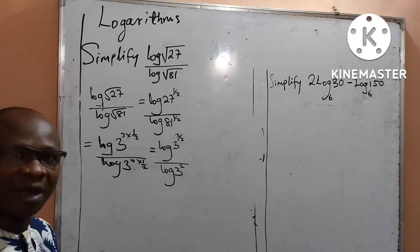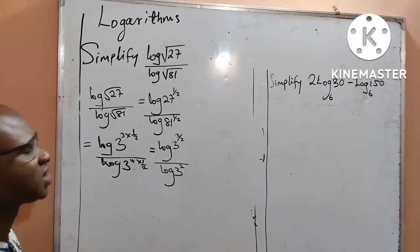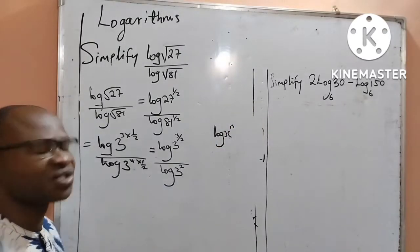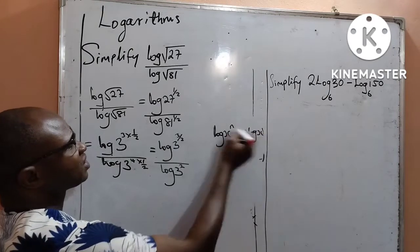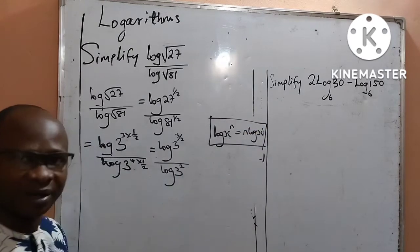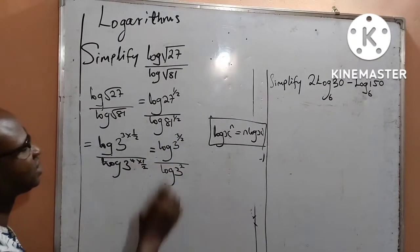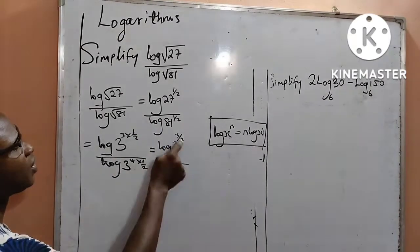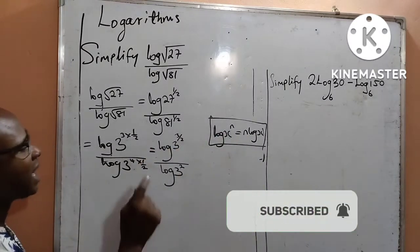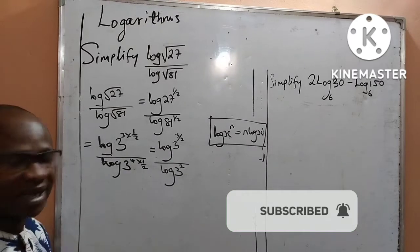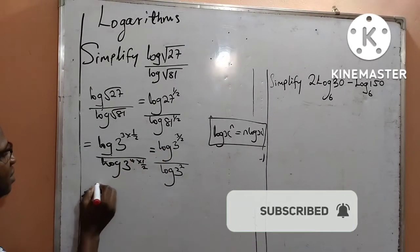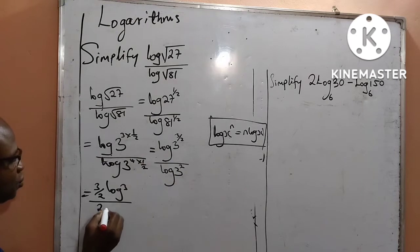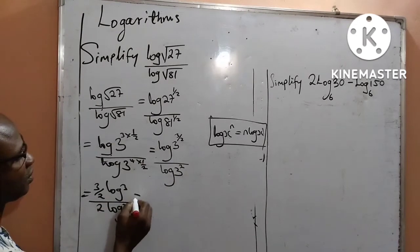Now I want to apply the power law of logarithms. That law says: if you are given log x raised to power n, it is equal to n log x. This is a law in logarithms. So I shall be applying it to this question, where I have log 3 raised to power 3 over 2. The 3 over 2 will now move to the front. And at the denominator, the 2 will also move to the front. That implies I shall be having 3 over 2 log 3 at the numerator, and 2 log 3 at the denominator. This is very correct.